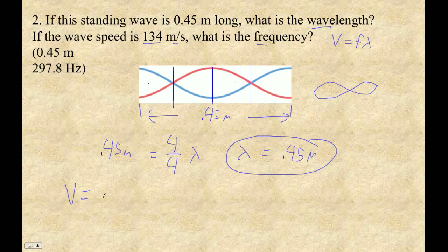And now we're going to use V is F lambda to find the frequency. So 134 meters per second is the frequency, which we don't know, times 0.45.